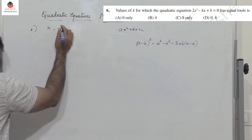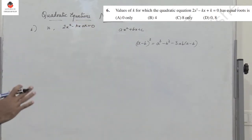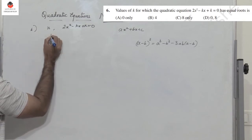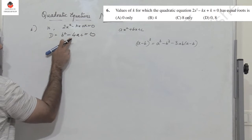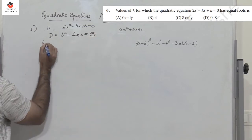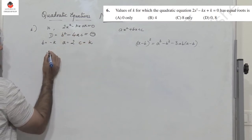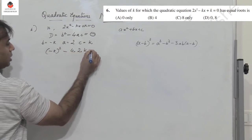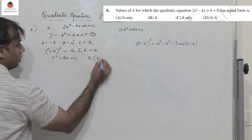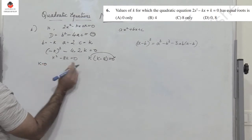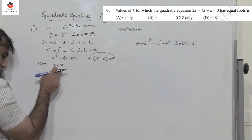Question 6: find the values of K for which 2x squared minus Kx plus K equals 0 has equal roots. For equal roots, the discriminant B squared minus 4AC equals 0. Here B is minus K, A is 2, and C is K. Substituting: minus K squared minus 4 into 2 into K equals 0, giving K squared minus 8K equals 0. Taking K common: K(K minus 8) equals 0, so K equals 0 or K equals 8. The answer is option D.